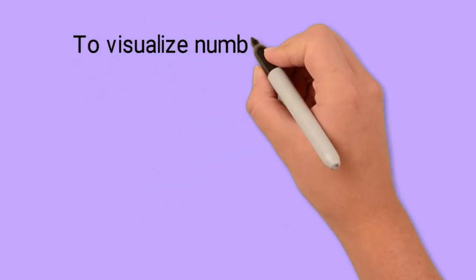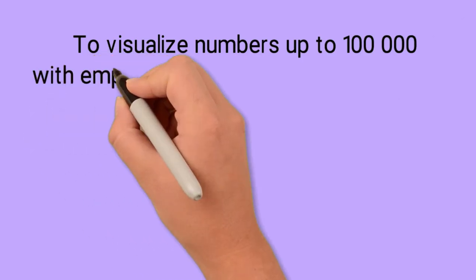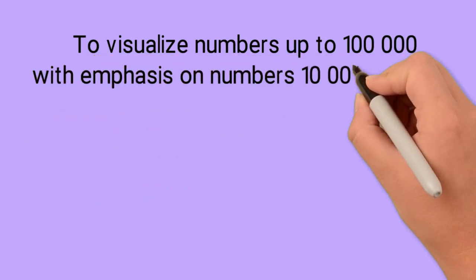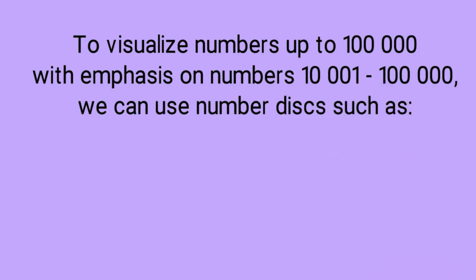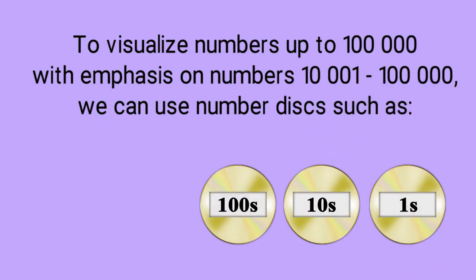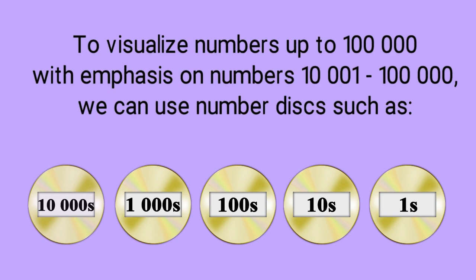To visualize numbers up to 100,000 with emphasis on numbers 10,001 up to 100,000, we can use number disks, such as 1s, 10s, 100s, 1000s, and 10,000s.